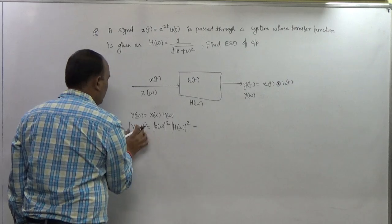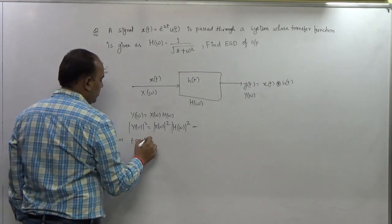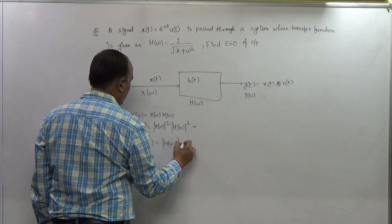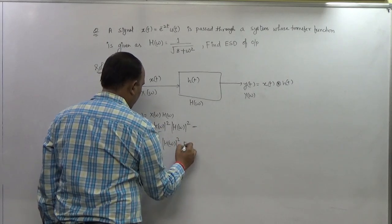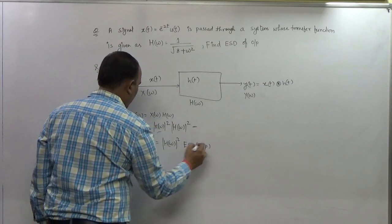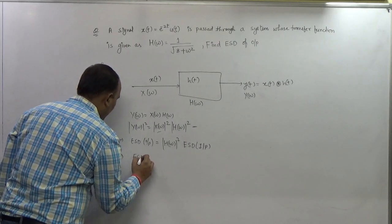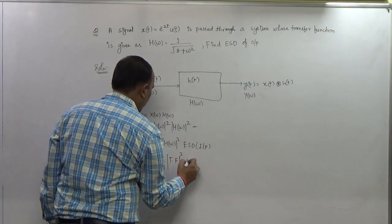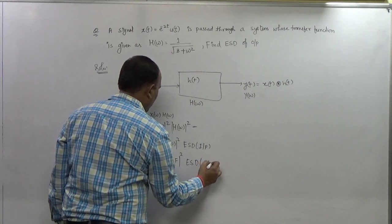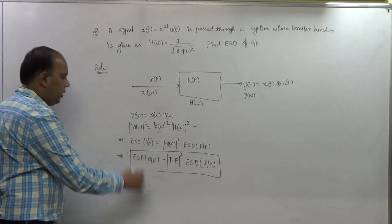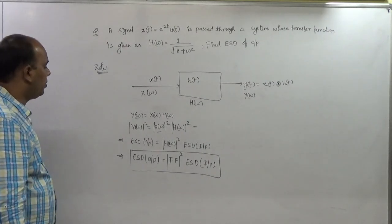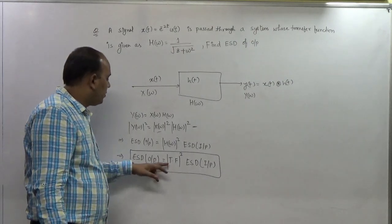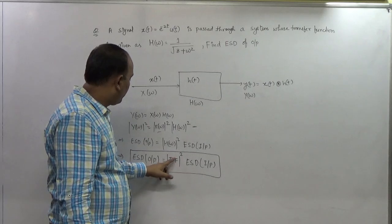The energy spectral density of the output equals |H(ω)|² times the energy spectral density of the input. So the energy spectral density of the output equals the mod square of the transfer function multiplied by the energy spectral density of the input.